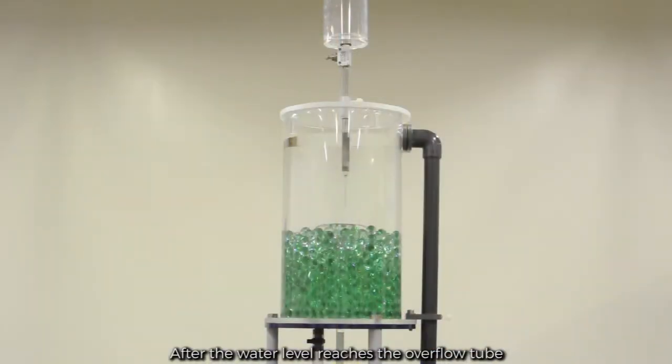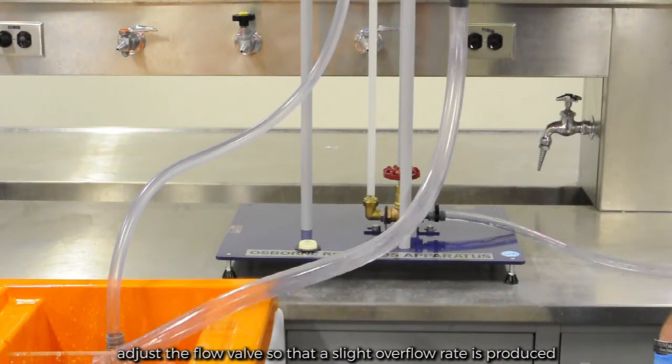After the water level reaches the overflow tube, adjust the flow valve so that a slight overflow rate is produced.